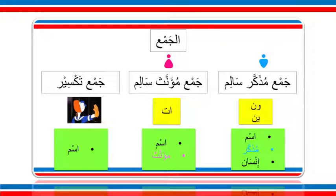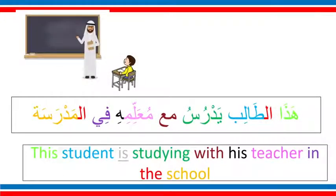To remember the conditions, they are three, two, one: ثلاثة, اثنان, واحد. In جمع مذكر سالم we have three conditions — the word should be اسم, مذكر, and إنسان (human). In جمع مؤنث سالم the word should be اسم and مؤنث only. In جمع تكسير, any noun (اسم) can be here if it's not جمع مذكر سالم or جمع مؤنث سالم.